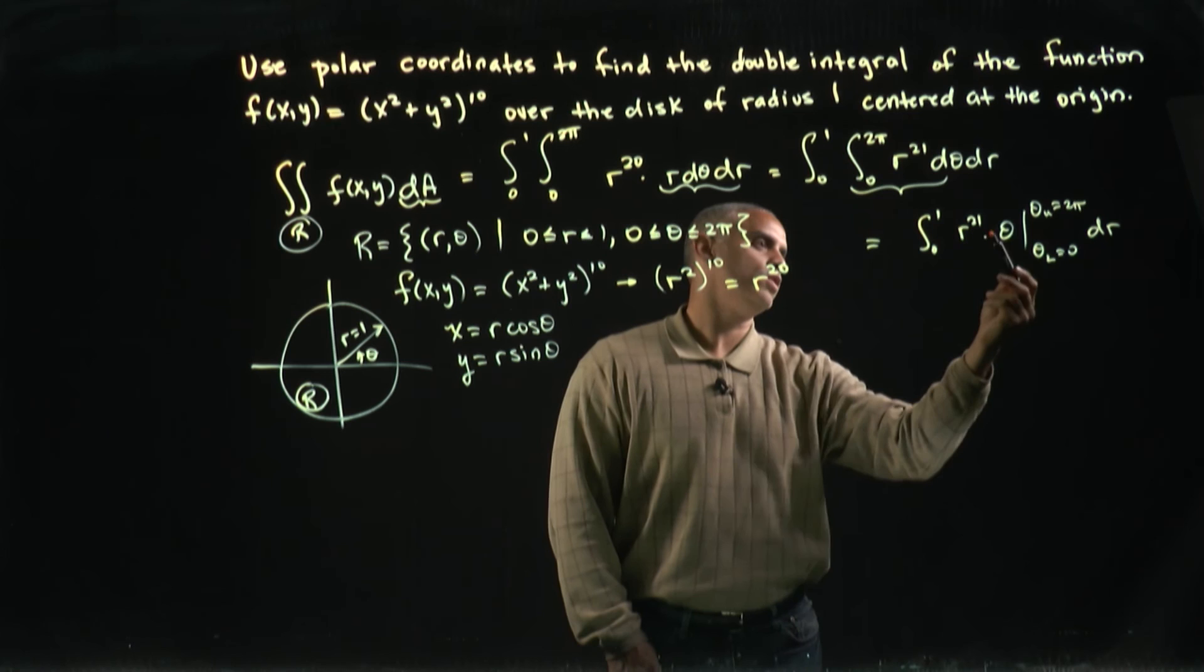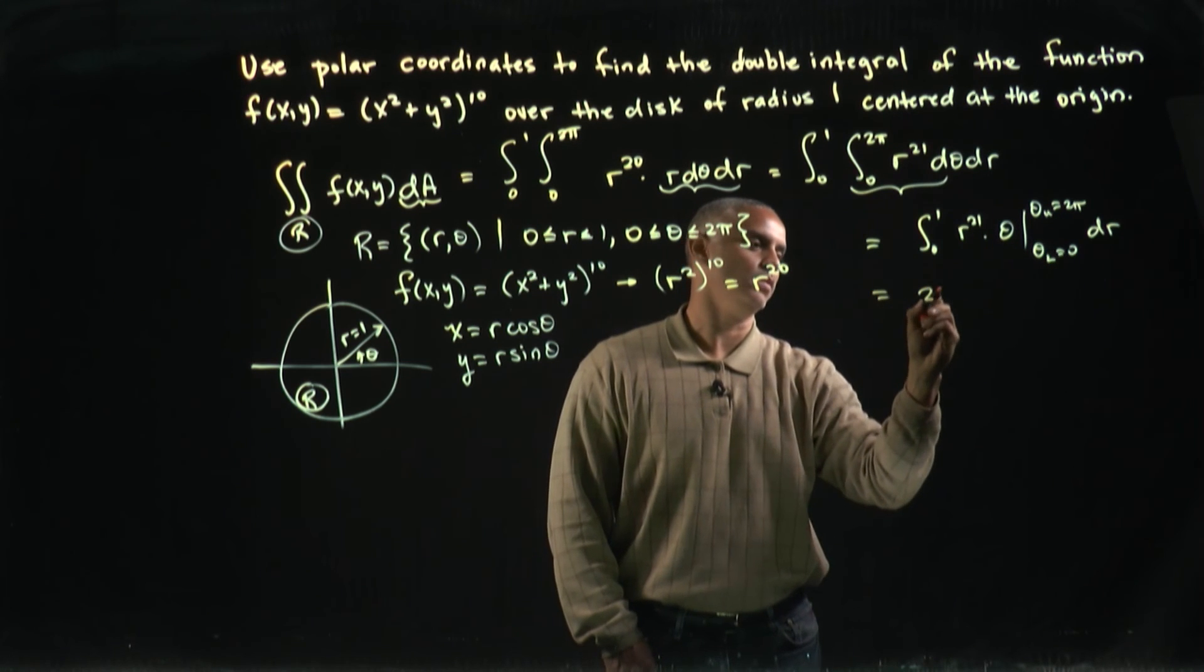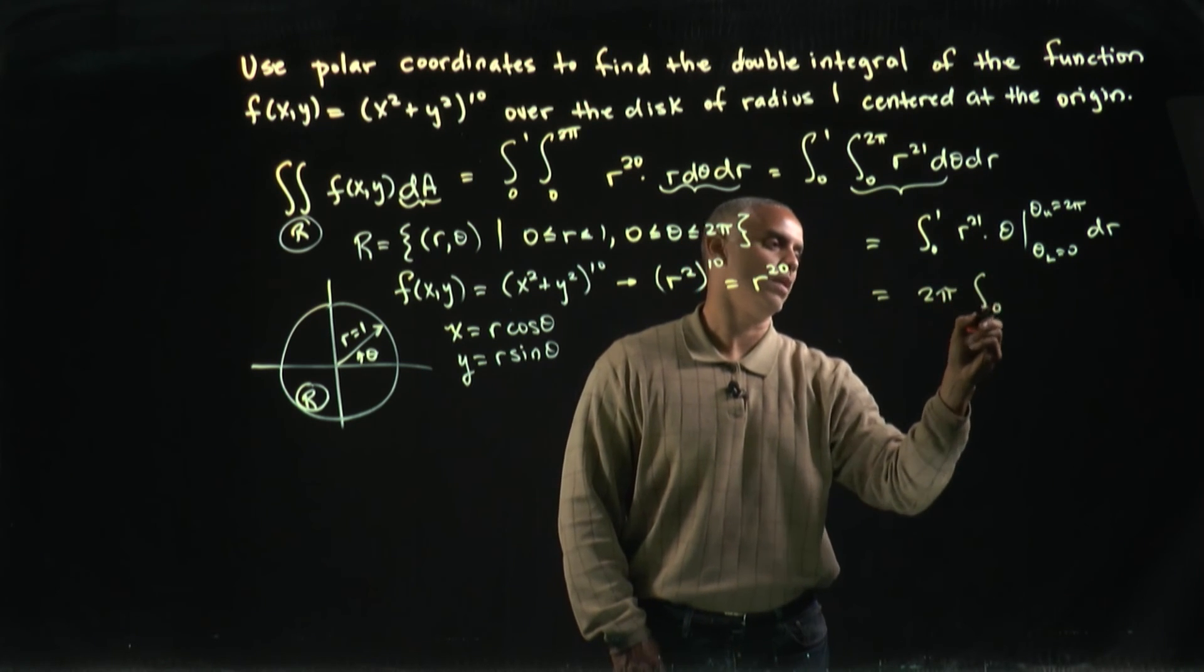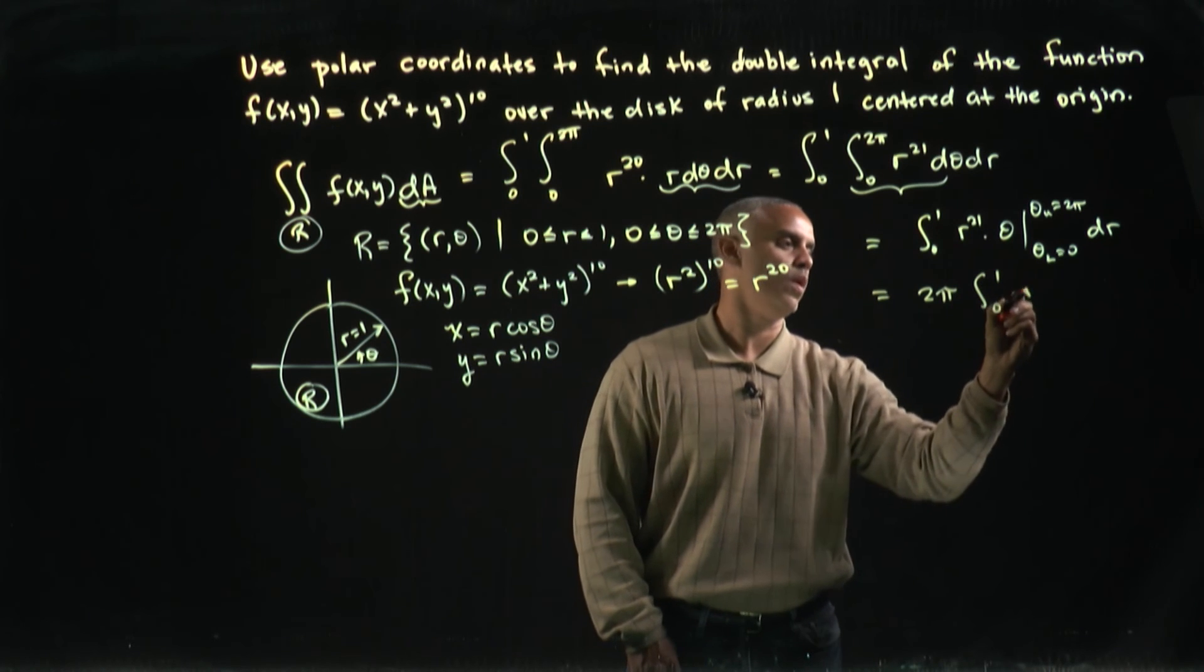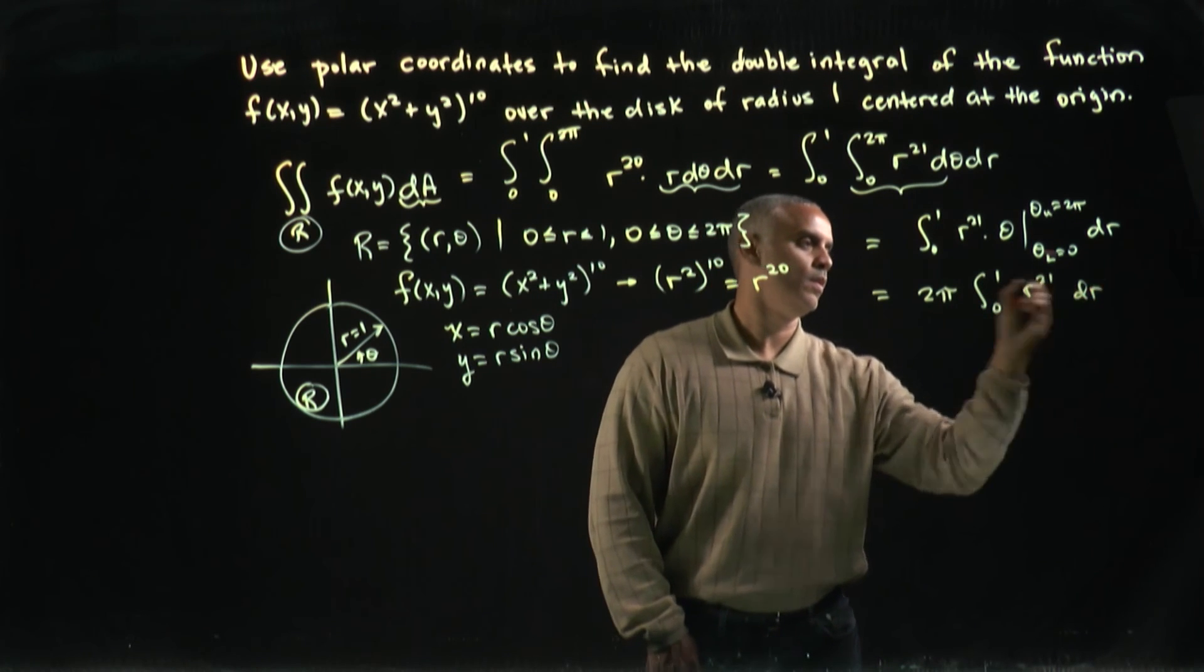If I use the evaluation theorem, just 2π will come out of this, which is a constant I can write out front. So I get 2π times the integral from zero to one of r^21 dr.